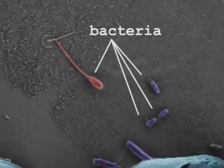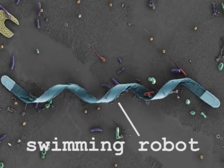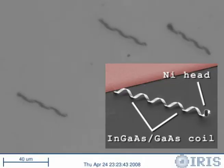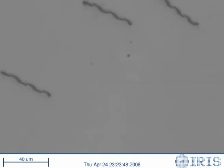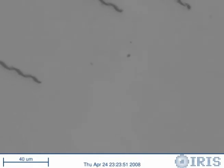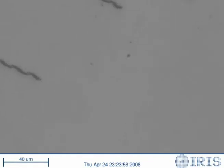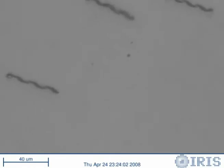The helical swimming robot consists of two parts: a helical body and a soft magnetic metal head. By adjusting the rotating speed and direction of the magnetic field, velocity and direction of motion can be controlled. The helical swimmer has demonstrated a velocity of approximately 18 microns per second at 30 revolutions per second. By inversing the rotating magnetic field, the swimmer turns in the opposite direction and the linear motion is reversed.